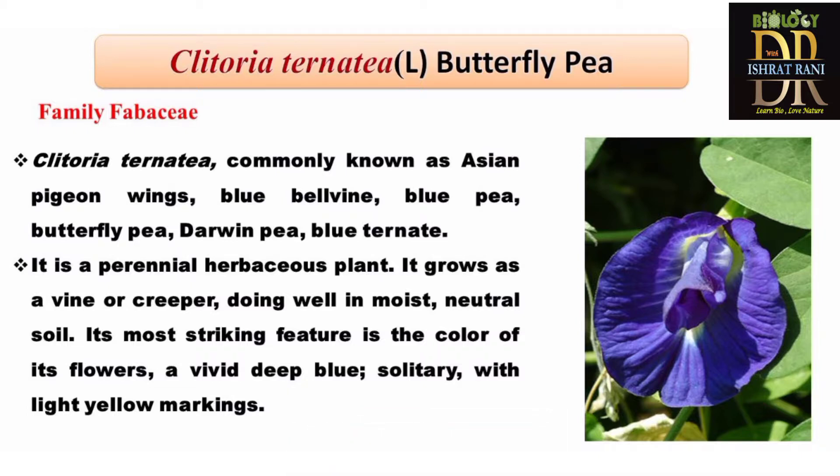It is a perennial herbaceous plant. It grows as a vine or creeper in neutral soil. Its most striking feature is the color of its flower — a vivid deep blue, solitary, with light yellow markings.